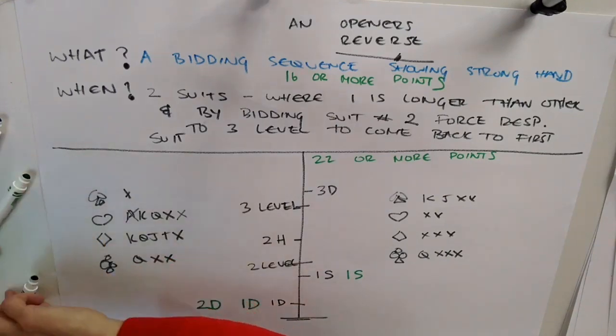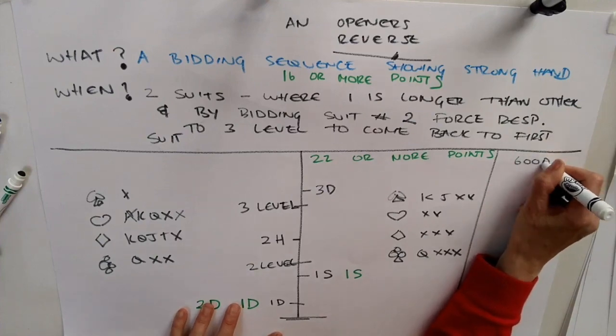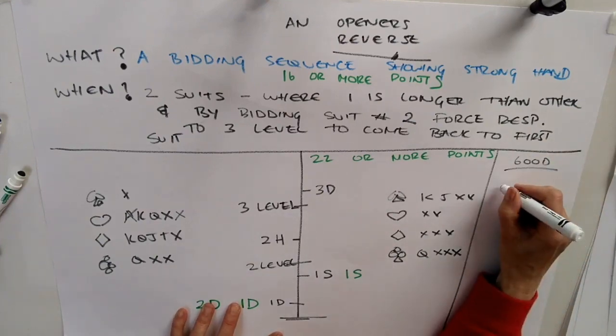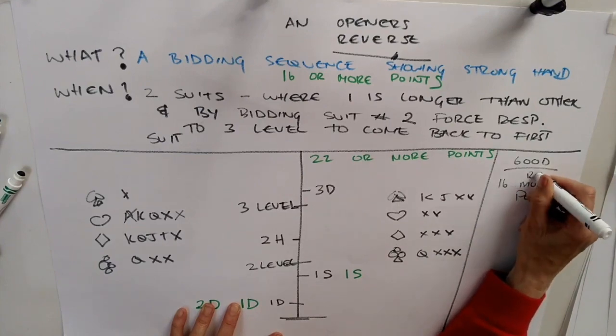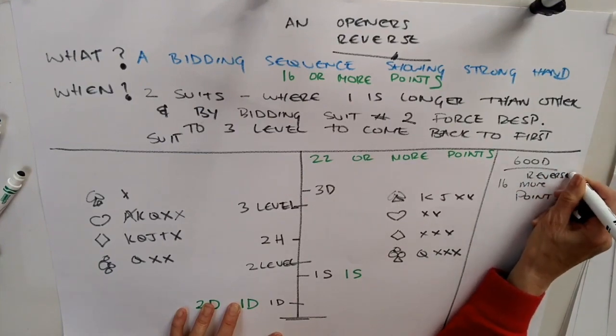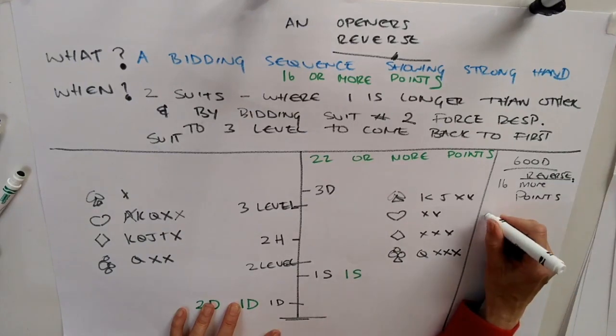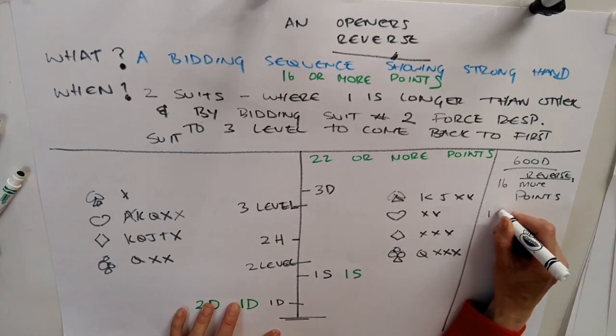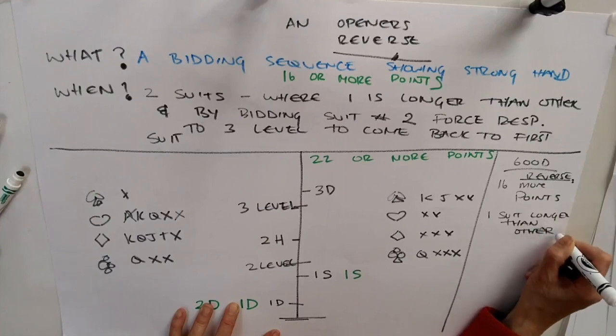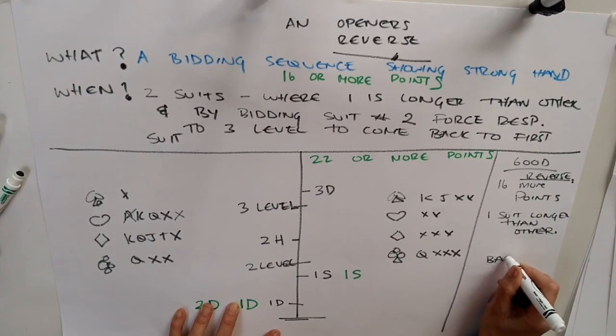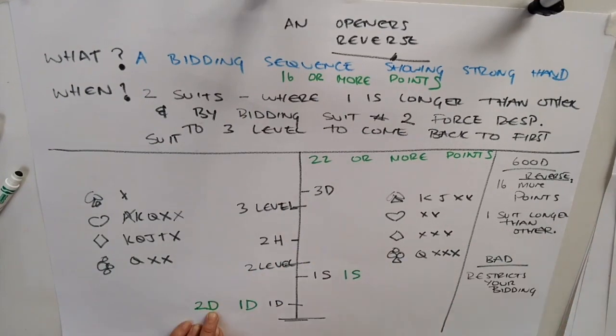So there are good and bad things about this reverse bid. The good things is that you know that if your partner does make a reverse bid, they've got 16 or more points, and that's really useful information. Also note, know that they will have one suit longer than the other. Also useful information. And the bad is that sometimes you have to repeat your first suit and hide a four card suit, which might be a major.